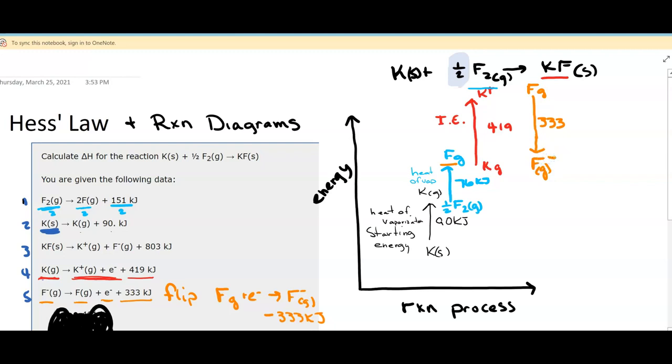So we've plussed in 90 plus 76 plus 419 kilojoules of energy, and in forming the anion to react with the potassium ion, we've released 333. We now have our reactants—the potassium ion and the fluoride ion—in fit condition to join together to make potassium fluoride.